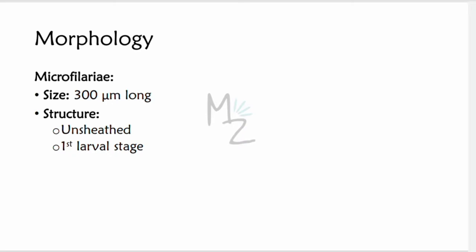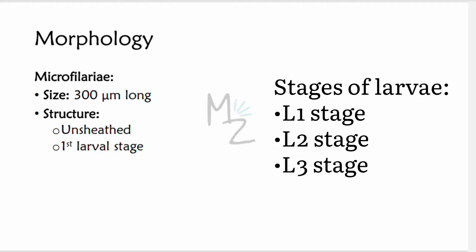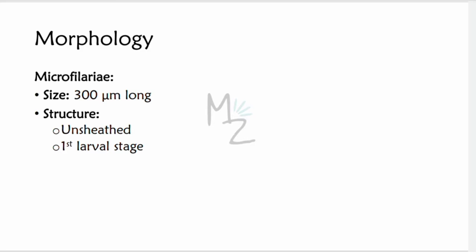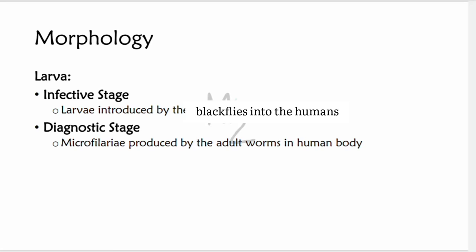This unsheathed form is the first larval stage, also called L1. There are three larval stages: L1, L2, and L3. When the microfilariae undergo certain developments, they become L2 and eventually L3, the third stage larvae. The L3 larvae is infective to human beings because the blackfly injects those L3 larvae into humans. The infective stage is the L3 larvae introduced by the blackfly, while the diagnostic stage is the microfilariae produced by the adult worms in the human body.